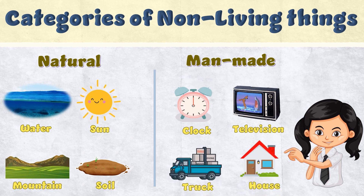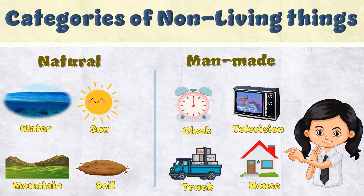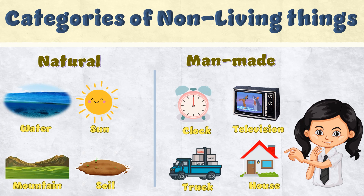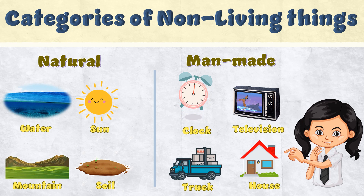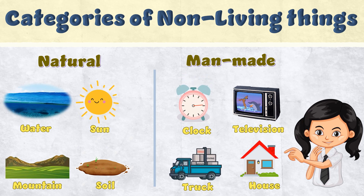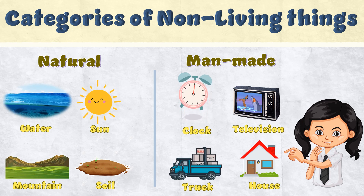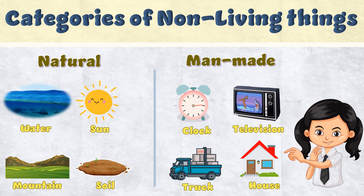Clock, television, truck, house — they all are man-made things and they all are non-living things. So, there are two types of non-living things: one is natural, and the other one is man-made.